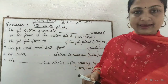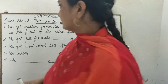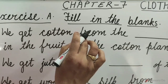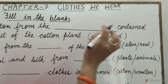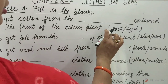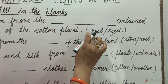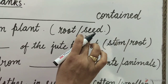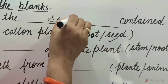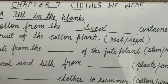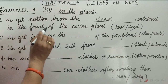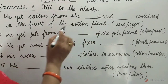Now come to Exercise A: Fill in the blanks. 1. We get cotton from the seed contained in the fruit of the cotton plant.